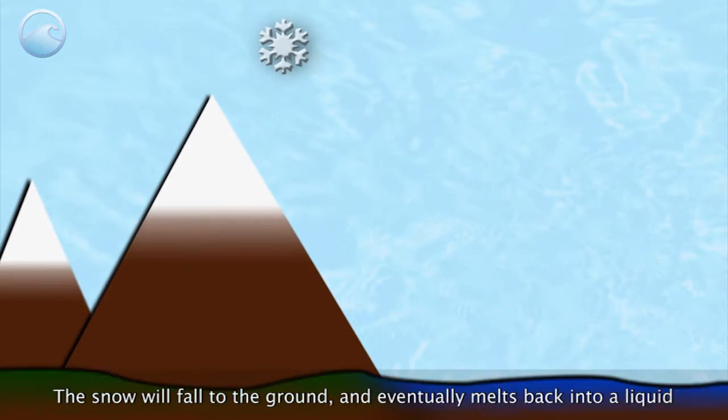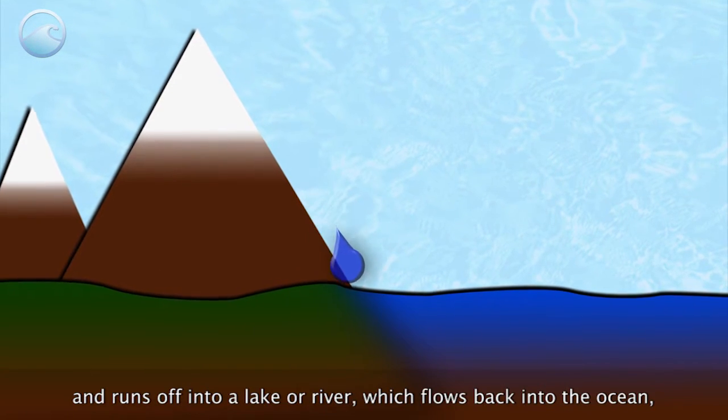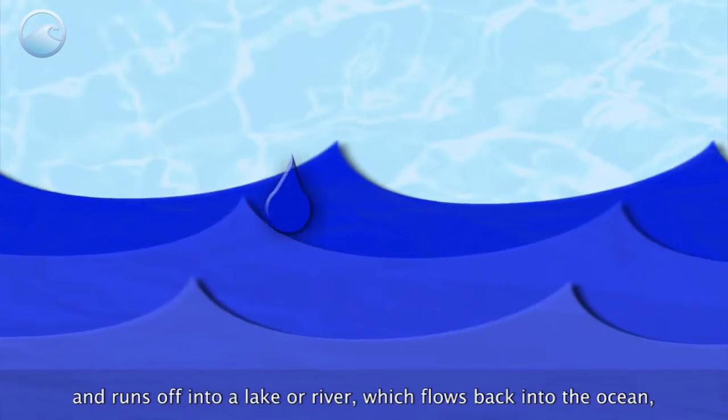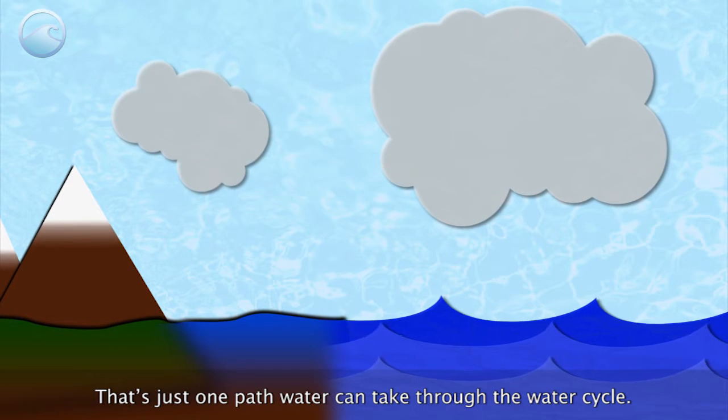Let's say this time it's snow. The snow will fall to the ground and eventually melt back into a liquid and run off into a lake or river, which flows back into the ocean where it starts the process again. That's just one path water can take through the water cycle.